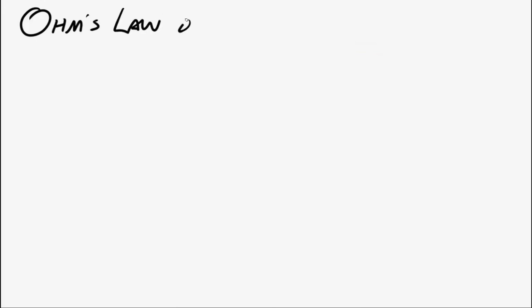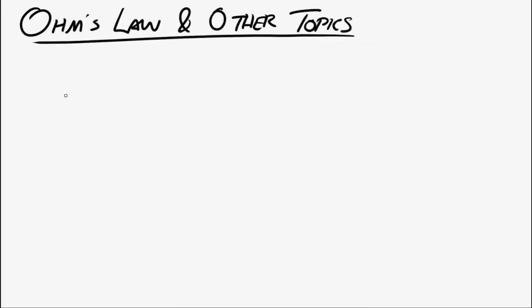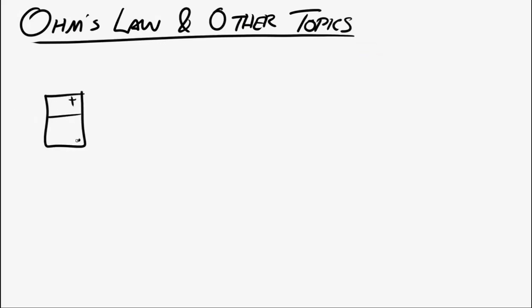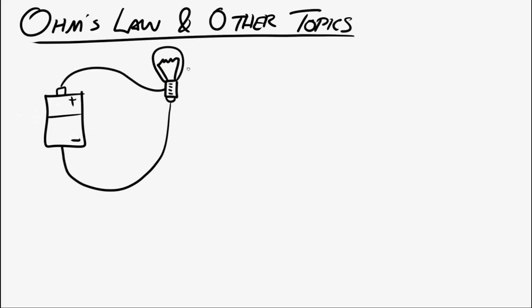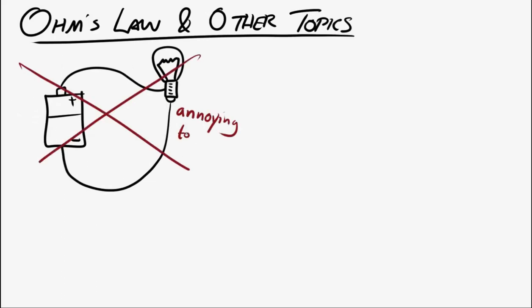Let's look at Ohm's Law and other circuits topics. Before we get into that, we really need a way to represent circuits well. It's frustrating to have to draw a physical representation of a battery, a wire, and a light bulb — those are objects with lots of details. So we usually represent those things with symbols.